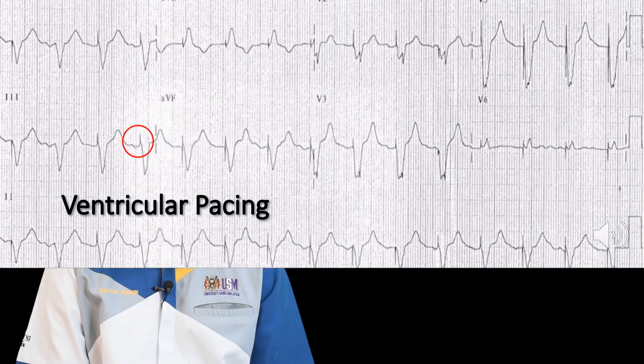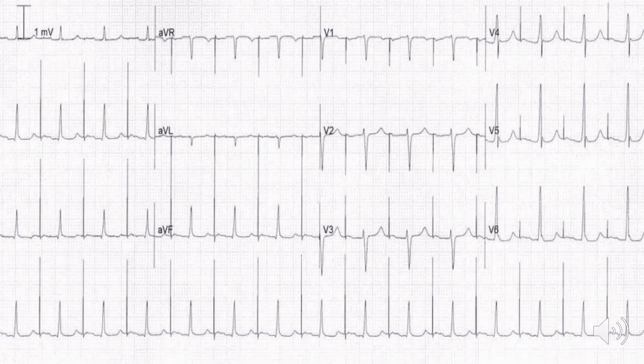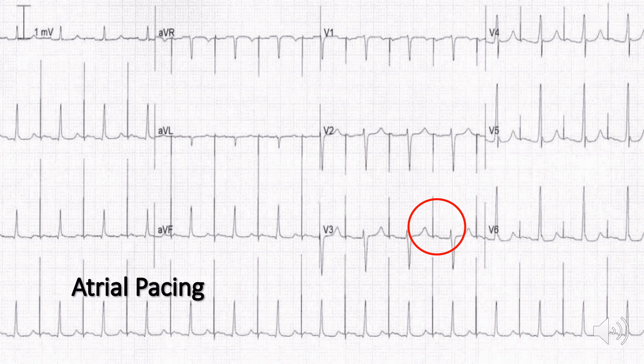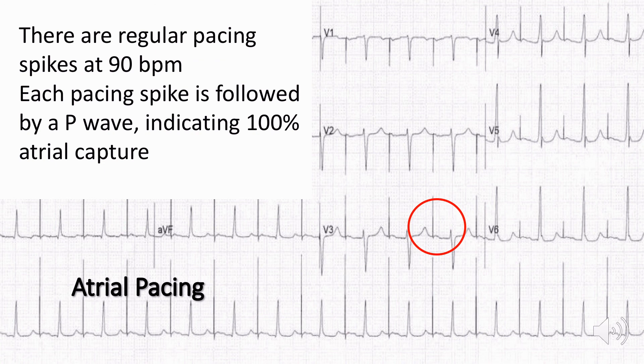The next example is an atrial pacing ECG. In this ECG you can see regular atrial pacing spikes at 90 beats per minute, and following each pacing spike there is a P wave, indicating 100% atrial capture. That concludes our first part on pacemaker rhythm ECG.